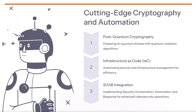The focus here is on cutting-edge cryptography and automation in cybersecurity. The first key topic is post-quantum cryptography — preparing for the potential threats posed by quantum computing by adopting quantum-resistant algorithms. Second is infrastructure as code, or IaC, automating the management of security and infrastructure for greater efficiency. The third topic is SOAR — security orchestration, automation, and response — implementing these capabilities to enhance overall cybersecurity operations. These three areas represent important technological advancements organizations must understand to stay secure.